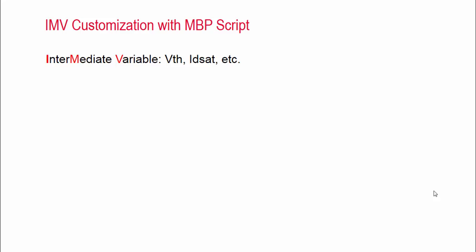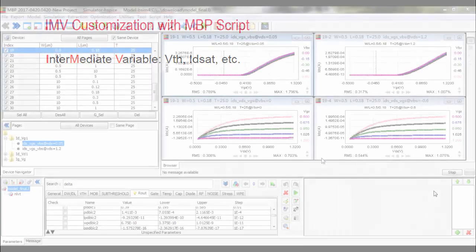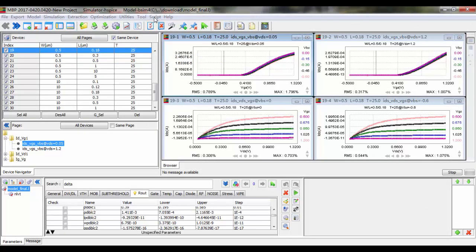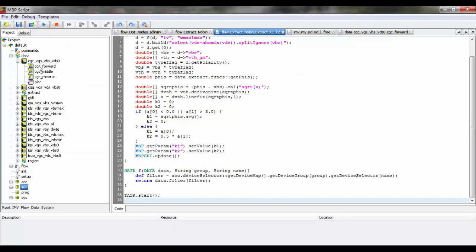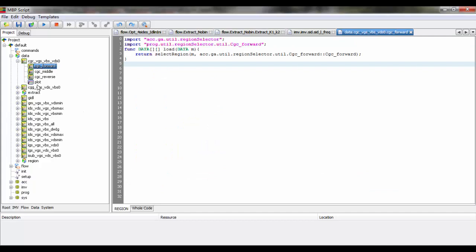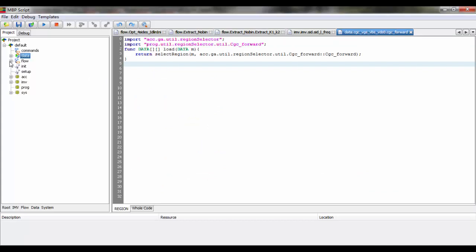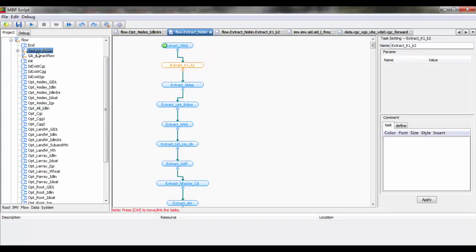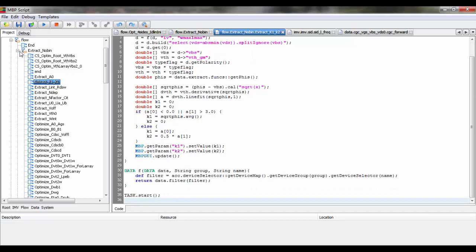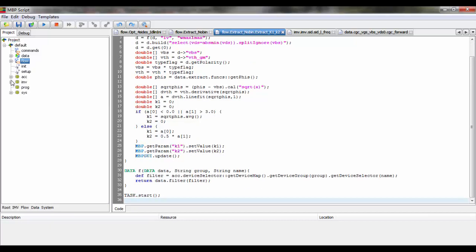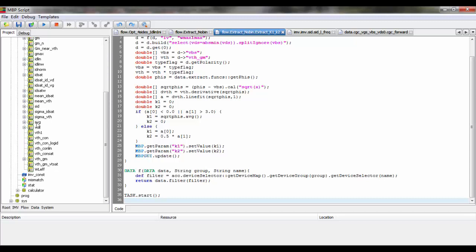In the previous slides, we studied short channel effects and their effects on threshold voltage. VTH is referred to as an intermediate variable or IMV in MBP. Using the script within MBP, we can define algorithms to calculate IMV and add new IMV plots as required in your extraction flows. MBP script is based on Java and supports most of Java expressions. We can use the script language to transform data, define plots, run optimization, and customize extraction flow.